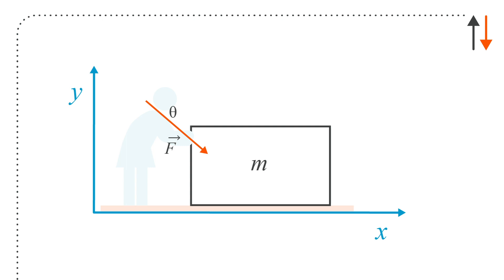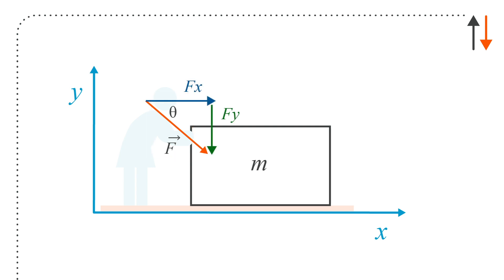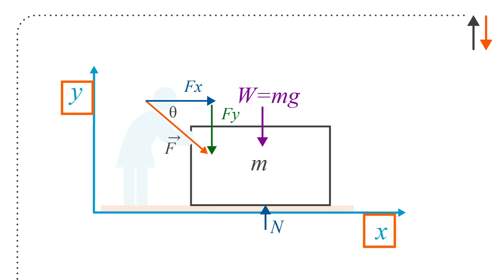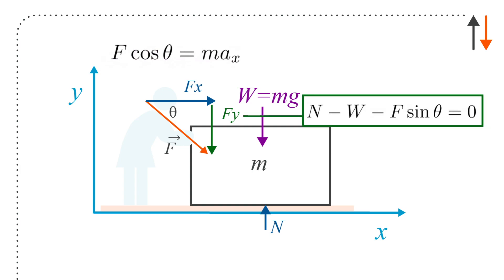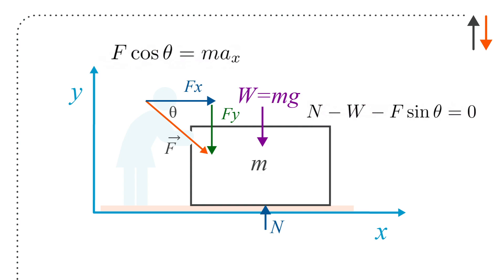You can look at more complex cases. For example, the person is now pushing at an angle theta with respect to the horizontal, and the block is again moving. The force F has components Fx and Fy. You also have the weight force and the normal force. I've defined the Y and X axes here — it's helpful to keep doing this as you encounter more complex geometries. In that case, force in X equals mass times acceleration in X, and force in Y equals F sine theta. Because weight is downward and Y is positive upward, weight is also a negative value.